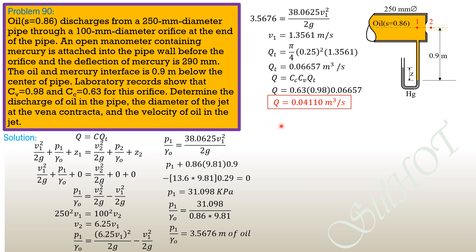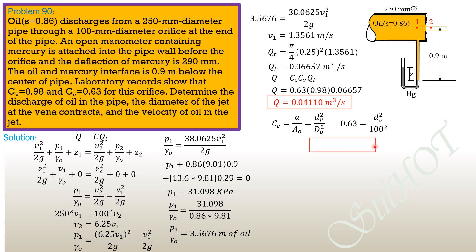For the diameter of the jet at the vena contracta: C_c = A_vena contracta / A_orifice = D_vc² / D_orifice². Substituting: 0.63 = D_vc² / 100², so the diameter at the vena contracta = √(0.63 × 10000) = 79.37 mm.